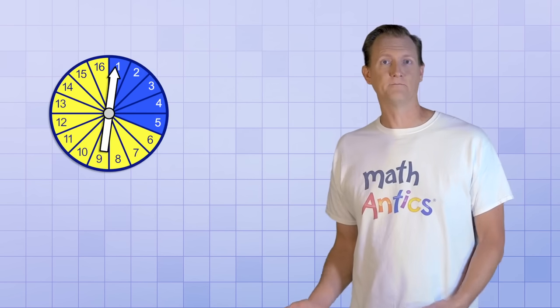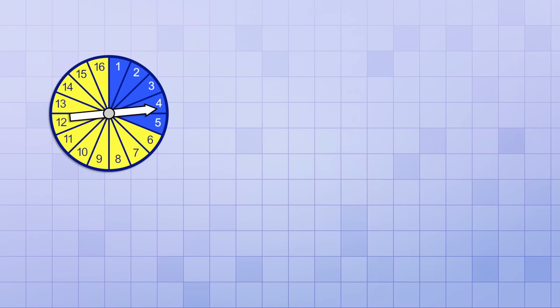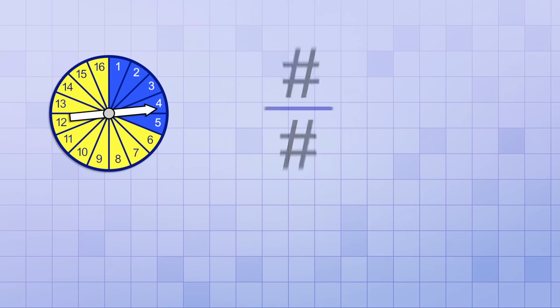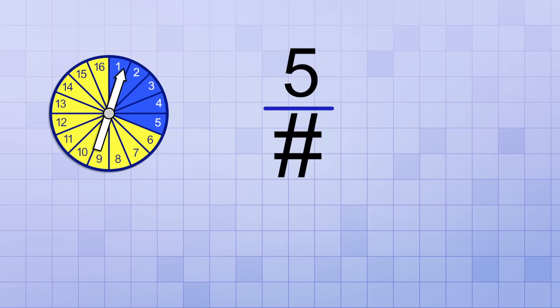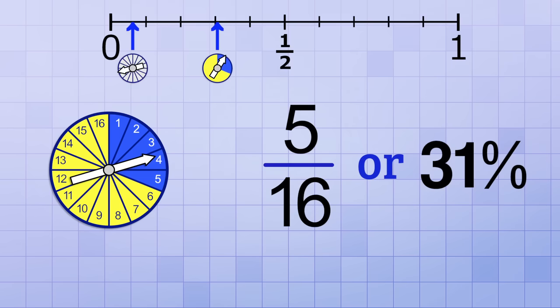But, what if we color some of the sectors a different color and we want to know the probability of spinning a certain color? Now we have 5 sectors colored blue and 11 sectors colored yellow. So, what's the probability of spinning a blue? Remember how with the coin toss, we ended up with the fraction 1 over 2 and with the die roll, we got the fraction 1 over 6? In both cases, we had 1 as the numerator and that's because we were interested in only one of the possible outcomes, like the probability of flipping heads or the probability of the number 3 being rolled. But in this case, the top number of our fraction will be 5 because any of these 5 sectors will give us the color we want and the bottom number will still be the total number of possibilities, which is 16 because that's how many total sectors we have. So, the probability of spinning a blue is 5 over 16. That's still considered unlikely, but it's more likely than spinning a specific number.